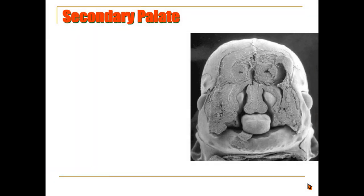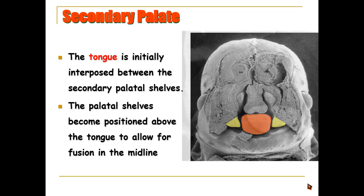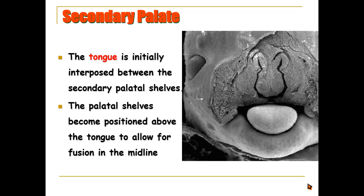In a coronal section, we can see the developing tongue and the palatine shelves. At first the tongue is interposed between the secondary palatine shelves, but they become repositioned above the tongue in order to fuse in the midline. If any alteration of this positioning takes place, it may lead to an anomaly such as cleft palate.